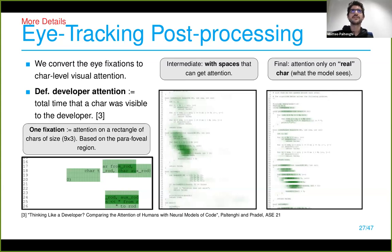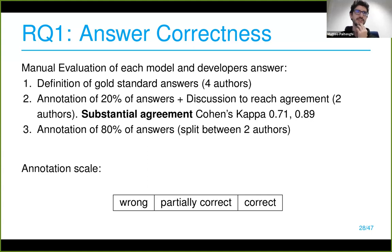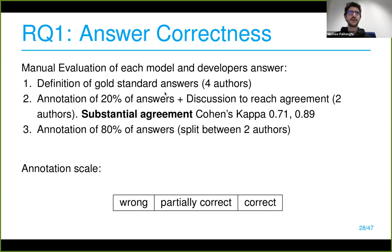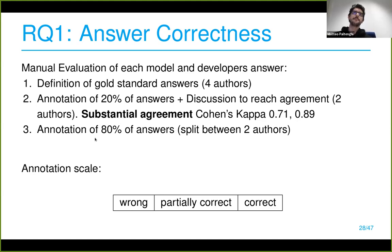For evaluating the sense-making answers — which are open-ended unlike code summarization — we defined a grading sheet and gold standard. Four authors defined it together, annotated 20 percent, discussed to reach agreement, and achieved substantial annotator agreement following the gold standard, then continued separately to annotate the rest.